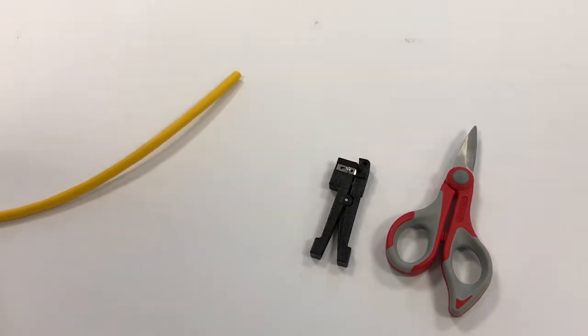So we have our cable on the left-hand side, a cable ringer in the middle, and a pair of utility scissors on the right-hand side.